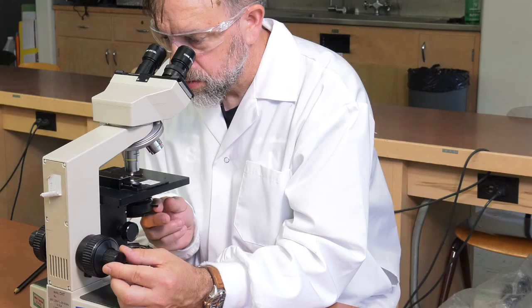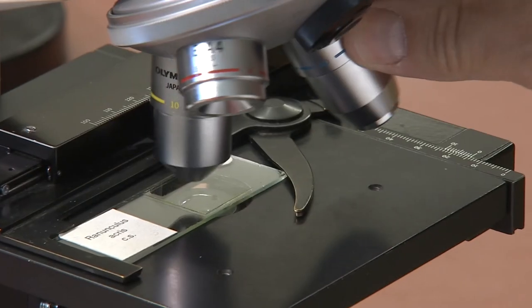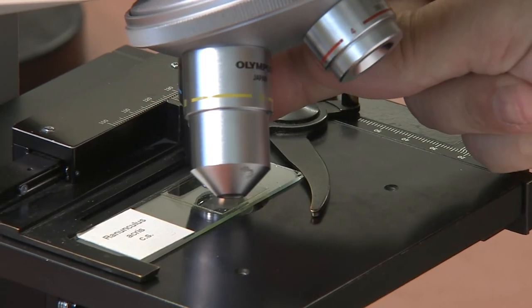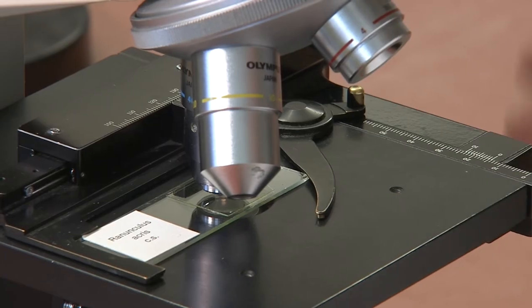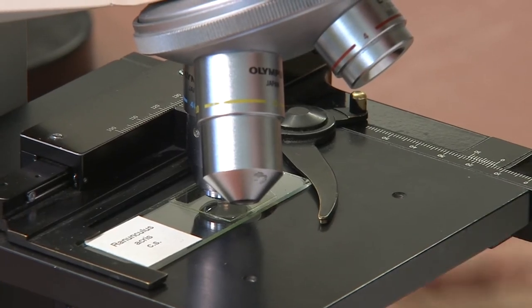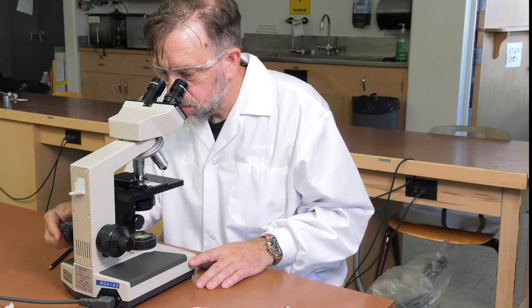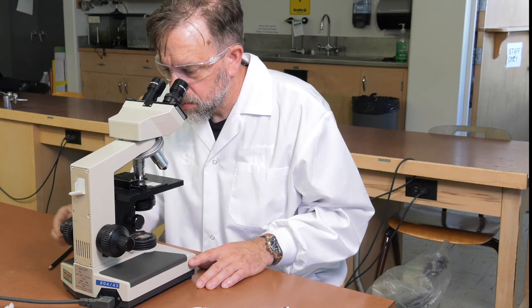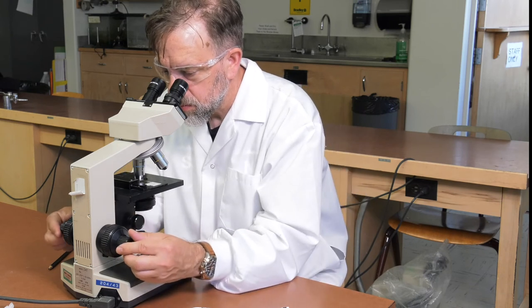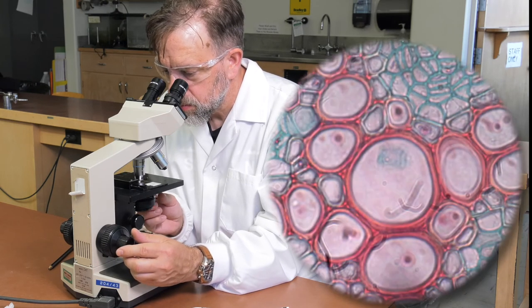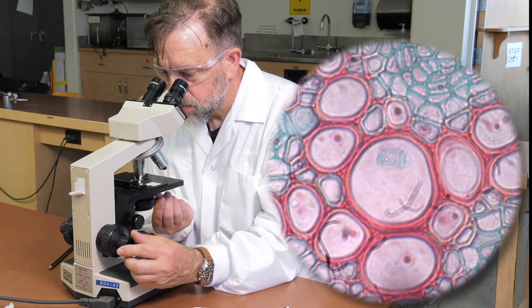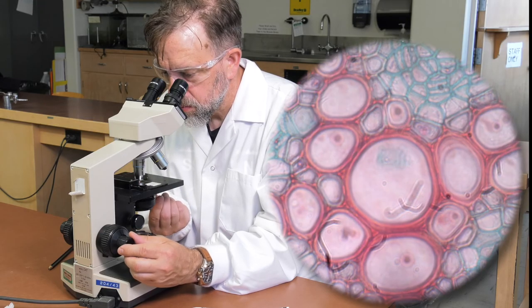With the specimen focused and centered on 10x, rotate the nose piece until the 40x objective lens clicks into position. If you could not see the specimen on 10x, do not switch to 40x. You will not be able to find it on 40x if you could not find it on 10x. Adjust the iris diaphragm if the image is too dark or too light, and focus using only the fine focus knob.